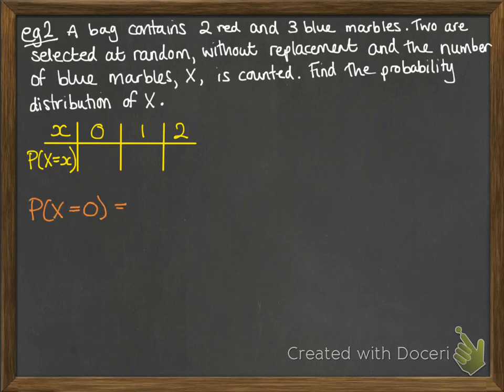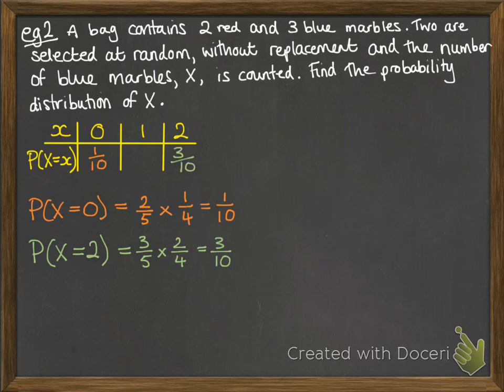So, first of all, let's think about the probability that x is 0. So that's the probability that we get no blue marbles. That would be to get a red and a red. So it would look like this. And we can put that 1/10 in there. Next one, I'm going to do the probability that x equals 2, because that's the next easiest one to do. Remember, you're trying to look for faster ways to do your answers. Don't just go through from left to right. Pick the ones that are going to be the fastest. So the probability that x equals 2 means that we get a blue and a blue. And that looks like this. So we can put that into our table.